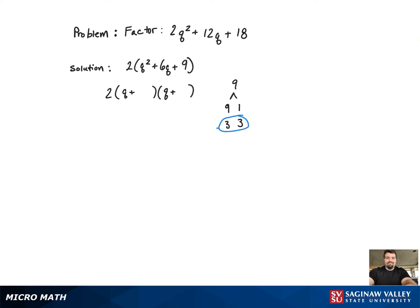That's going to be the 3 and 3. And we have our solution: 2 times the quantity q plus 3 times the quantity q plus 3. Or we can rewrite it as 2 times q plus 3 squared. And that's it.